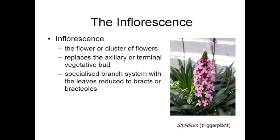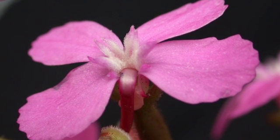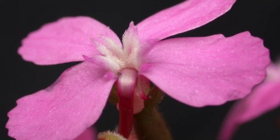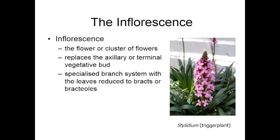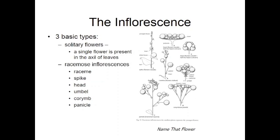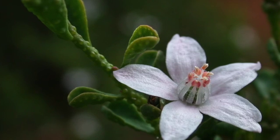One of the key characters for identifying plants is how the flowers are arranged on the plant. In this fabulous Stylidium, the flowers are arranged on a spike on a specialized stalk called a scape. But let's look at some other ways the flowers are arranged. The simplest way is to have a flower originating in the leaf axil on a flower stalk or pedicel — and that of course is a solitary flower.